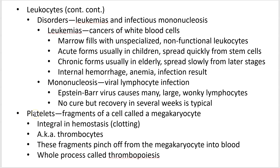Shifting to platelets, also known as thrombocytes — 'thrombus' meaning clot, so thrombocytes are clotting cells. They are fragments of a very large cell called a megakaryocyte. In bone marrow, you make this enormous cell and little chunks pinch off as they exit the marrow and enter the bloodstream — literally not whole cells, just cell fragments.